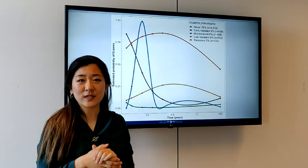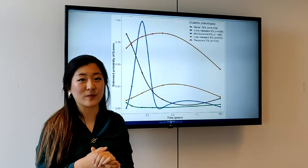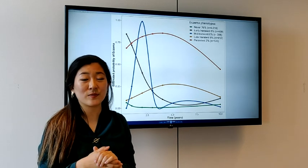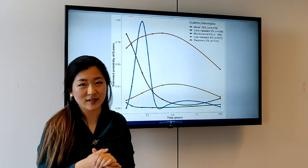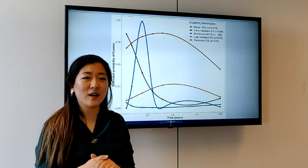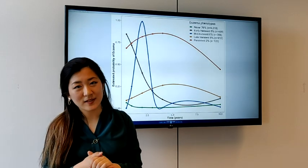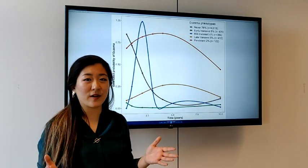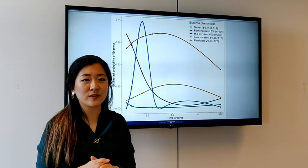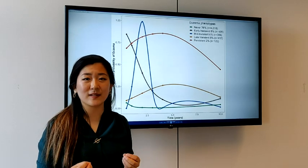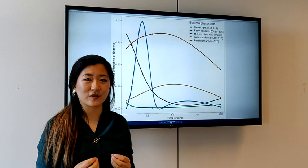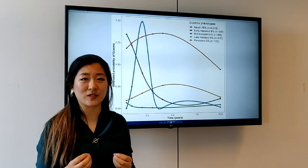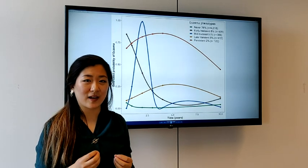Children with early-transient phenotype were mostly males, and children with late-transient eczema and persistent eczema were mostly of African and Asian ethnicity. So sex and ethnicity might have a predictive value for further research, but there is still much to gain to find new factors that better differentiate between the eczema phenotypes.